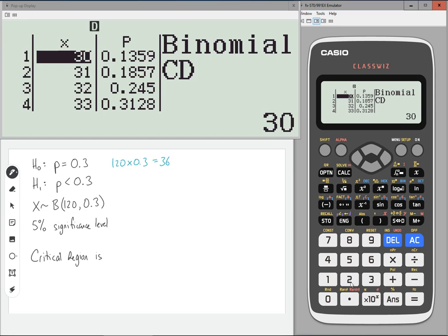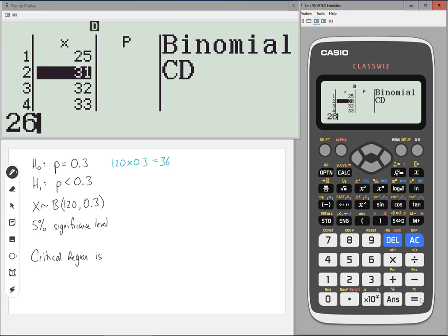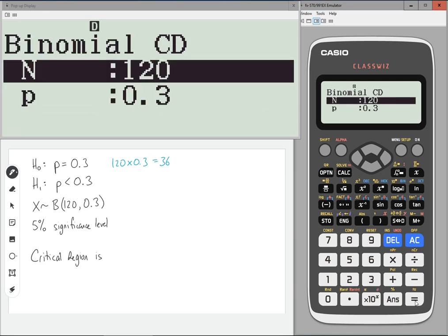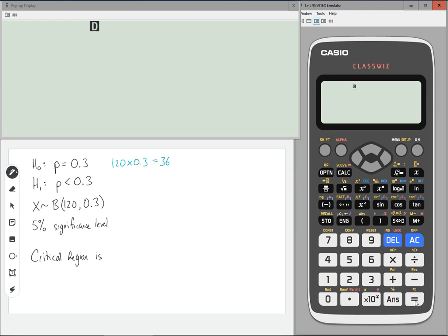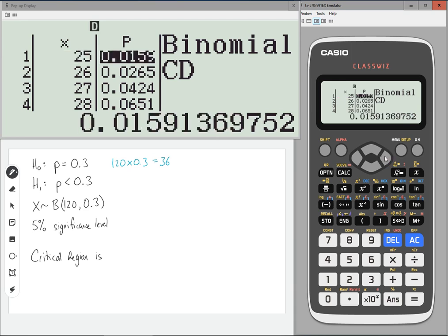So instead, I'm going to change these values up. So let's type in instead 25, 26, 27, 28, 29, and 30. Press equals. That should save that. Press equals again.